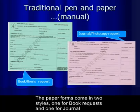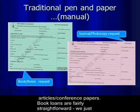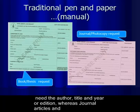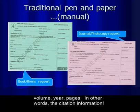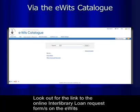The paper forms come in two styles: one for book requests and one for general articles or conference papers. Book loans are fairly straightforward — we just need the author, title, year, or edition. General articles and conference papers require the article details as well as the conference name, volume, year, or pages — in other words, the citation information.